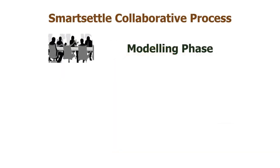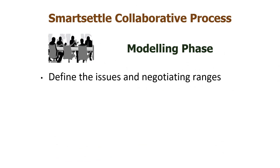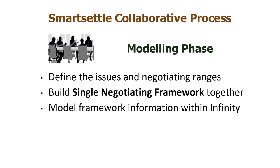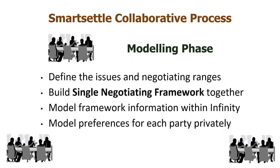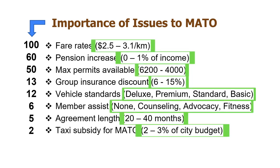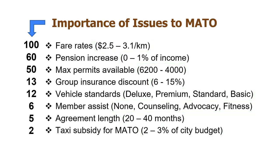The modeling phase starts out with parties working collaboratively together. After they have documented everything they agree on with a Single Negotiating Framework, that SNF is modeled within Infinity. The final step in the modeling process is done with each party privately. Here we see the issues listed in importance to METO. Each issue is assigned a negotiating range, with METO's preferred outcome on the right-hand side. The importance scale is arbitrary; in this case, METO set 100 points for fare rates, and each other issue was assigned an importance relative to that.